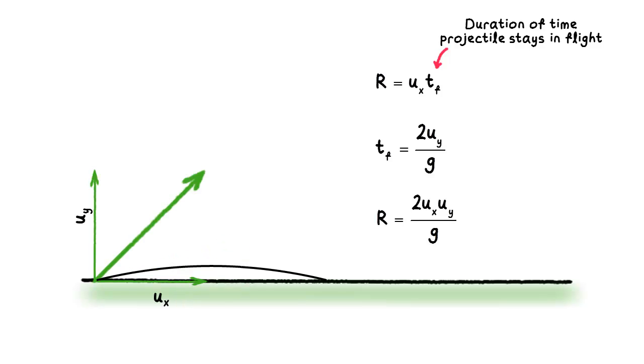If the angle of projection is too large, the horizontal velocity is too small, leading again to a short horizontal range.